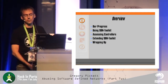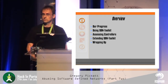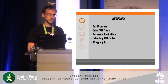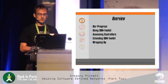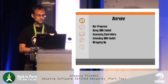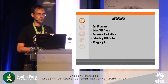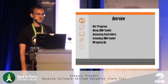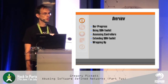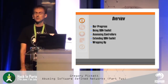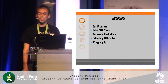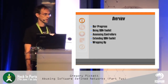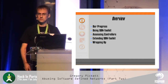An overview of today's talk: we'll start out with our progress. For lots of you this will be new — you weren't here for part one, so it helps to talk a little bit about what we were looking at the first time around. After that is using the SDN toolkit to continue the work we started. Next is assessing controllers — pretty straightforward. After that is extending the SDN toolkit for new versions of existing controllers or entirely new controllers. And then we'll wrap up with final thoughts and where to find the toolkit.